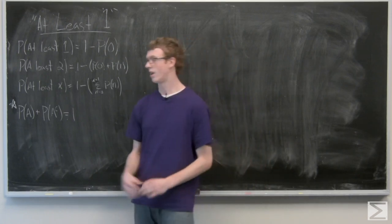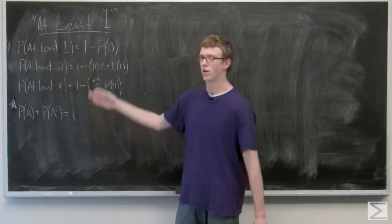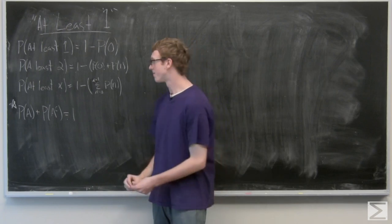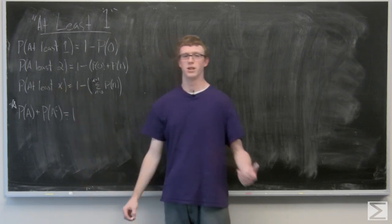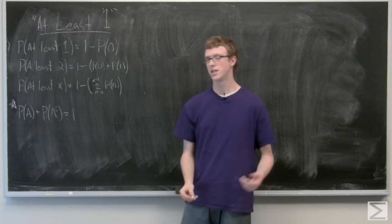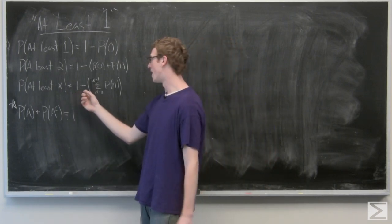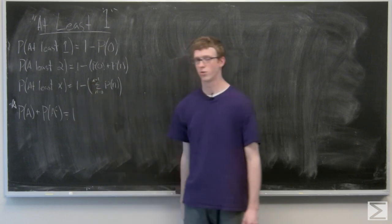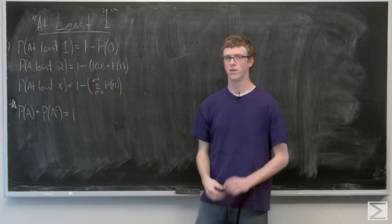The probability of at least two is one minus the sum of zero and one success, and we can define that to the general case. The probability of at least X is going to be one minus the summation from n equals zero to X minus one the probability of n successes.